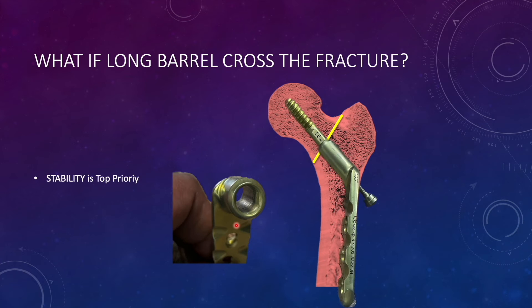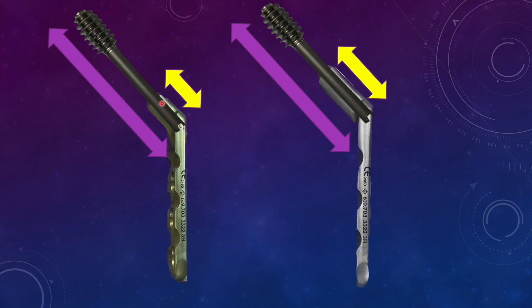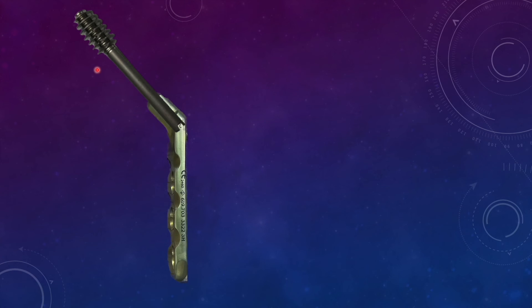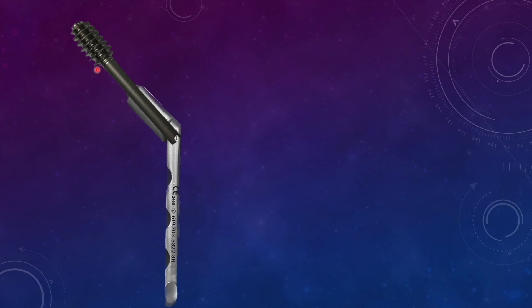Definitely go for a long barrel when stability is important. With the short barrel, the amount of screw inside the barrel is limited at 25 millimeter, while in the long barrel it is 38 millimeter. The lever arm of the screw outside the barrel is longer in case of the short barrel and shorter in case of the long barrel. This toggling can occur when the barrel is short, but in case of the long barrel, toggling will be prevented by the barrel length. The barrel covers a good part of the screw, so the space available for toggling is limited. In case of unstable fractures, definitely go for a long barrel.